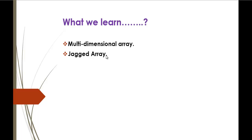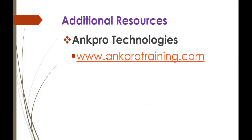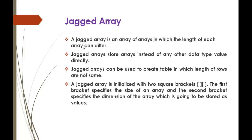In the jagged array, the length of each row can vary. To understand that clearly, we'll jump into a demo. A jagged array is an array of arrays in which the length of each array can differ. That is the difference between a multidimensional array and a jagged array.